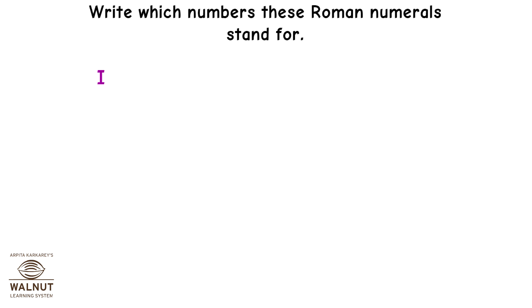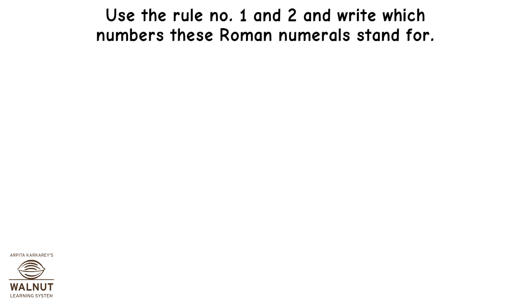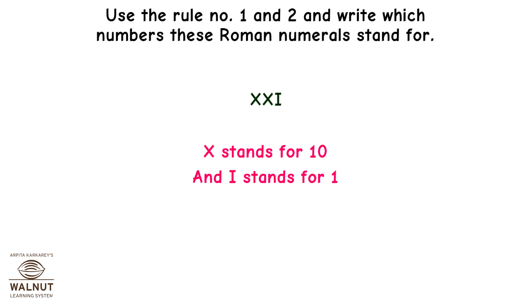Let us write which numbers these Roman numerals stand for: I stands for 1, V stands for 5, X stands for 10, III stands for 3, VII stands for 7, XVI stands for 16, XII stands for 12, VIII stands for 8, and XXX stands for 30. Using rules 1 and 2: XXIX — X stands for 10, I stands for 1, so XXI is equal to 10 plus 10 plus 1, which equals 21.